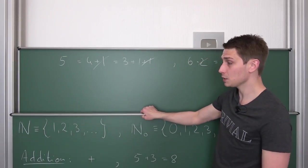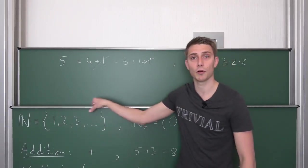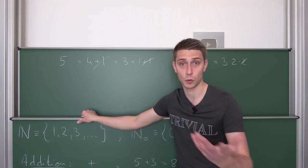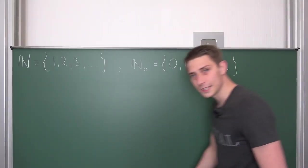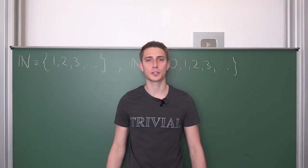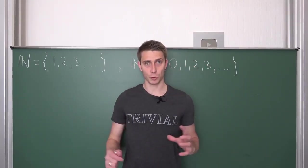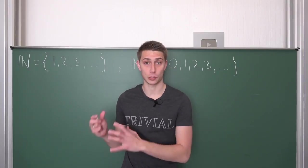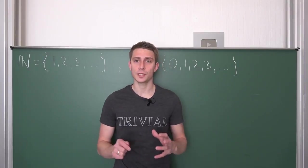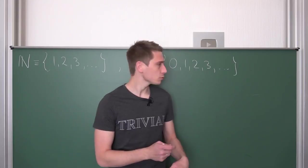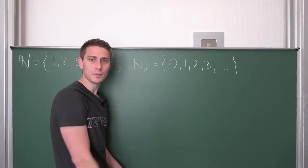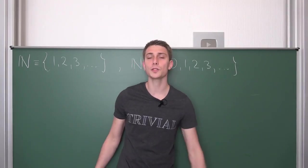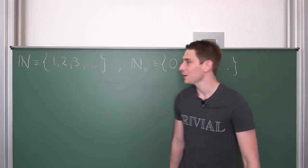Now we've talked about the basic operations in the natural numbers. If you can deal with those, you're well settled for all the other number sets we'll discuss later. In the last part of this video we would like to talk about the most important rules that hold in the natural numbers, as well as the ordering and how to deal with zero — it's a bit weird and has a few special rules. Let's dive right in.